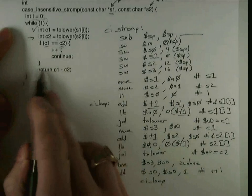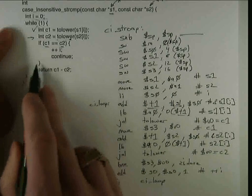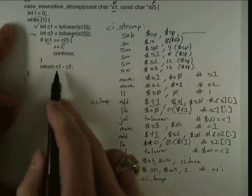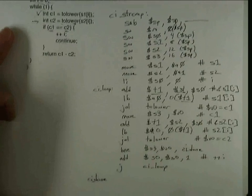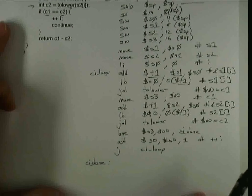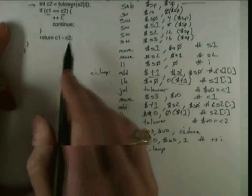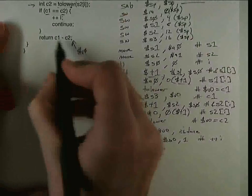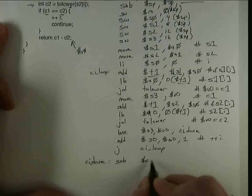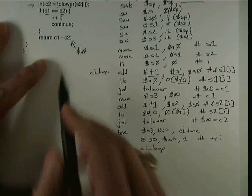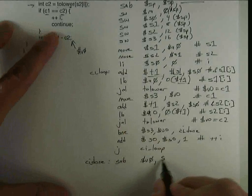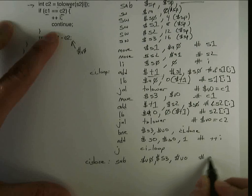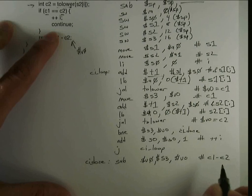So now I'm ready to handle this alternate to the if, which is ci done. Again, c1 and c2 are in registers, so I want to put the result into v0. So this is a subtraction, so I'm going to subtract, put the result into v0, and I'm subtracting v0 from s3. That gives me c1 minus c2.